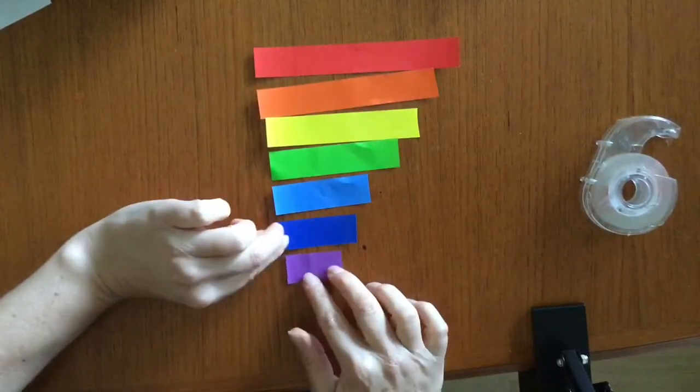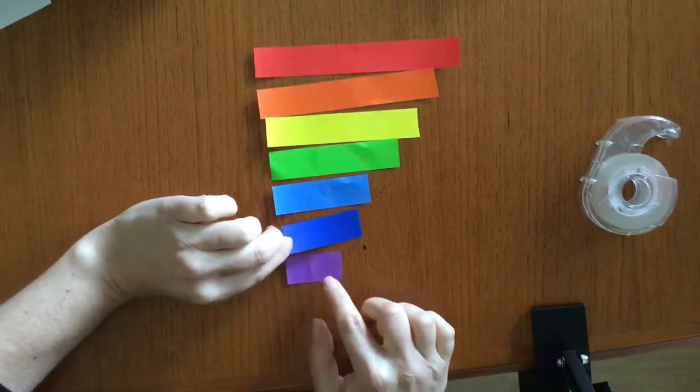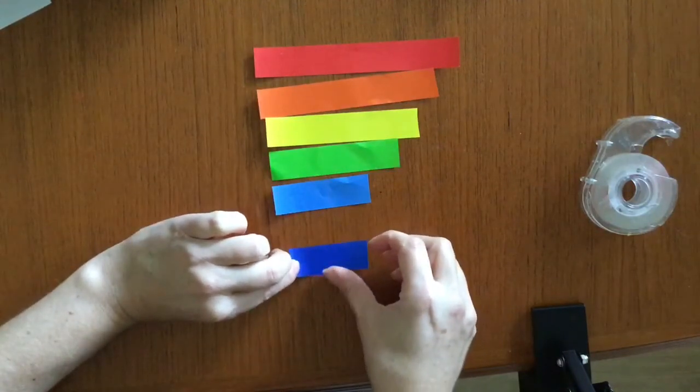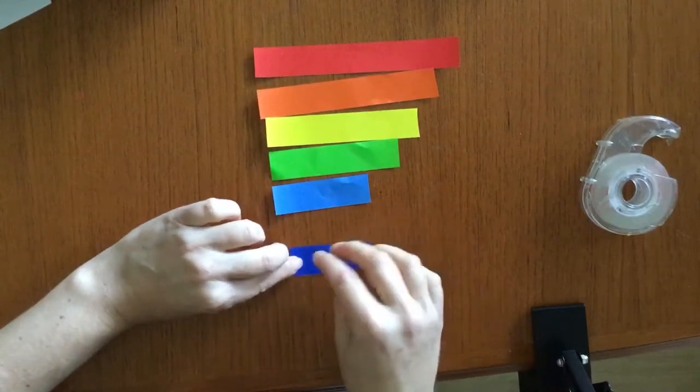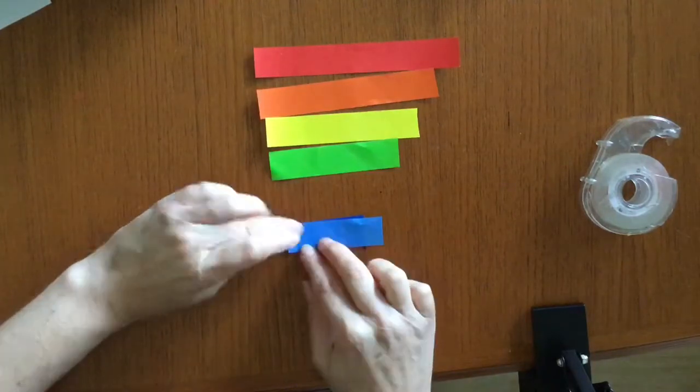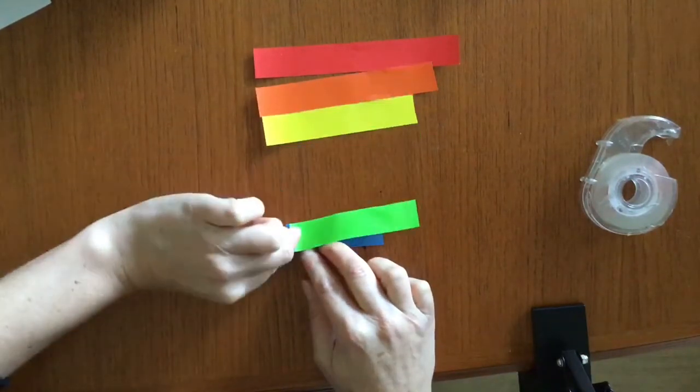Then what I'm going to do is stack them. So I'm going to put the violet on the bottom and then the blue, and I'm matching up the ends here really well.